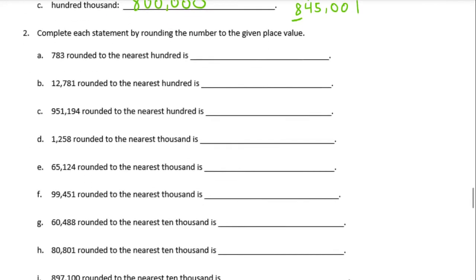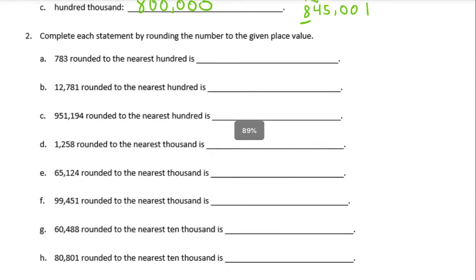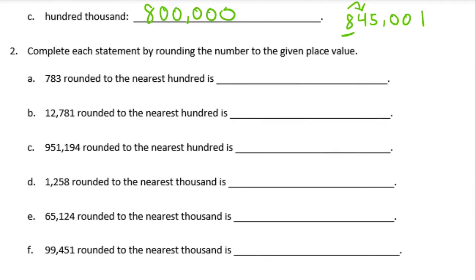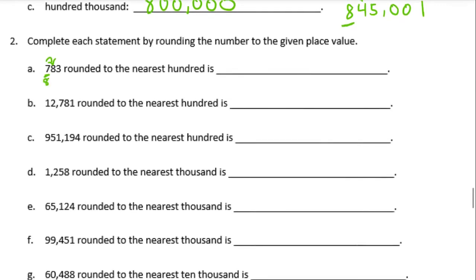Number 2: complete each statement by rounding the number to the given place value. We have 743 rounded to the nearest hundred. The seven is in the hundreds place. Next to it is an eight. That eight is five or higher, so we round the seven up to an eight, and it becomes 800.